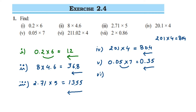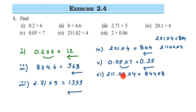The sixth question is 211.02 multiplied by 4. Multiply 21102 × 4 = 84408. After the decimal we have two digits, so from the right side after two digits — after 0 and 8 — we place the decimal. The answer is 844.08.